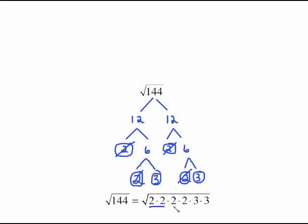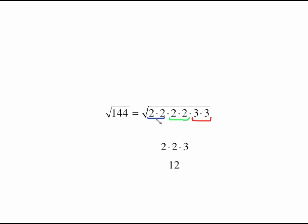Now we've got a pair of 2s, we've got another pair of 2s, and we've got a pair of 3s. So for each of those pairs, things are going to come out. For a pair of 2s, that 2 is coming out. For that pair of 2s, that one is coming out. And for the pair of 3s, that one is coming out.